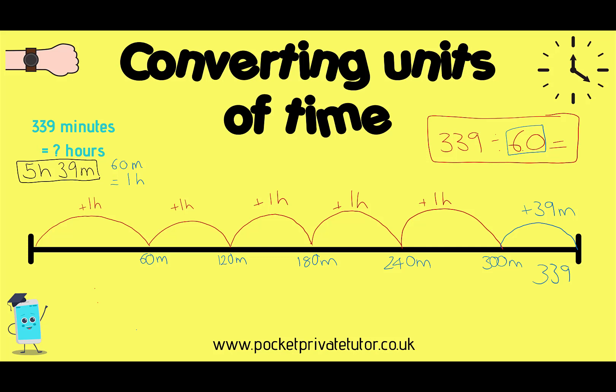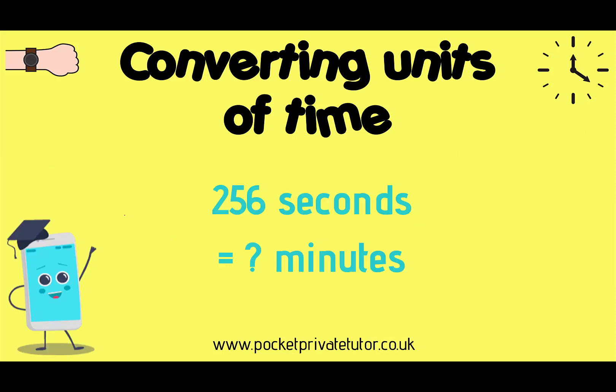If you do a division, you would have got the answer 5 remainder 39. Your remainder will be the 39 minutes: 5 hours and 39 minutes. If you know how to express remainder as a fraction or decimal, that will not convert to time — don't change your remainder to a fraction or decimal. Whatever you have left is the minutes, or whatever the original unit is.